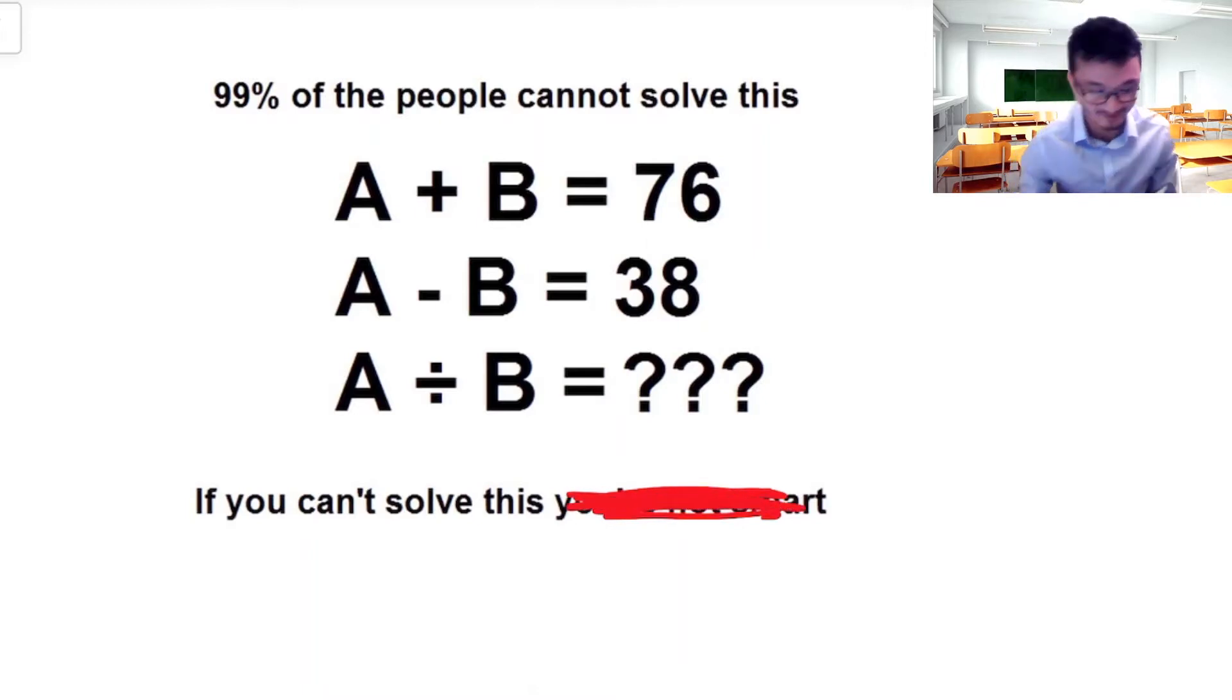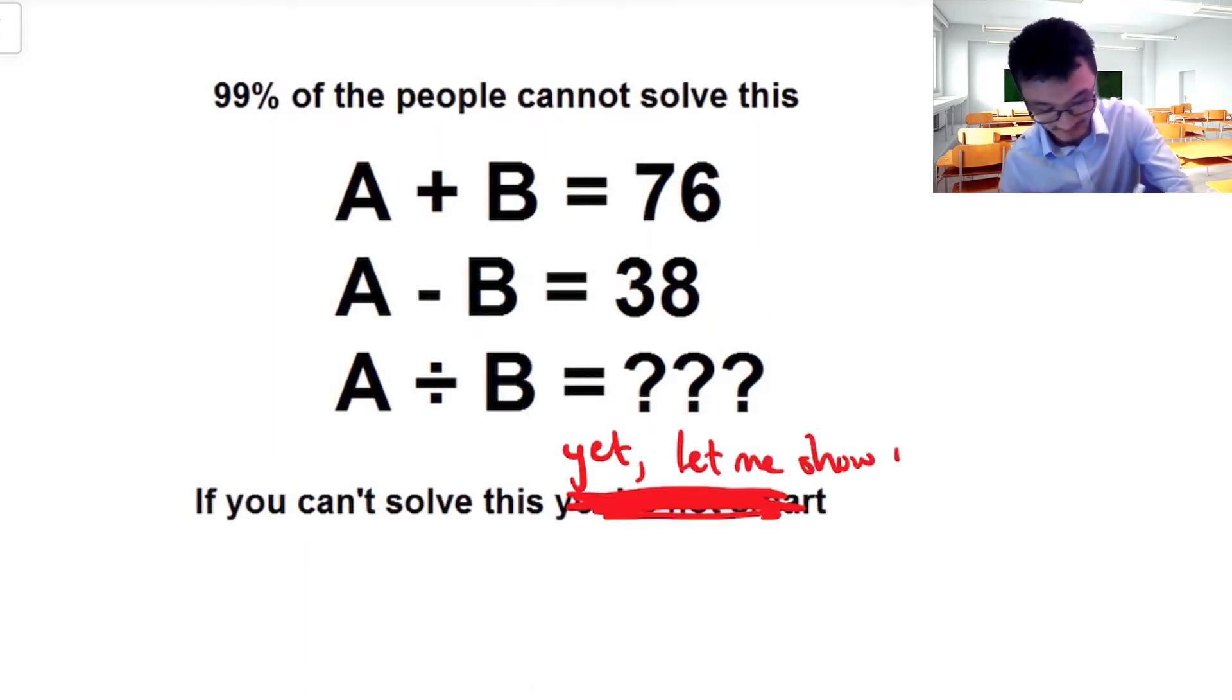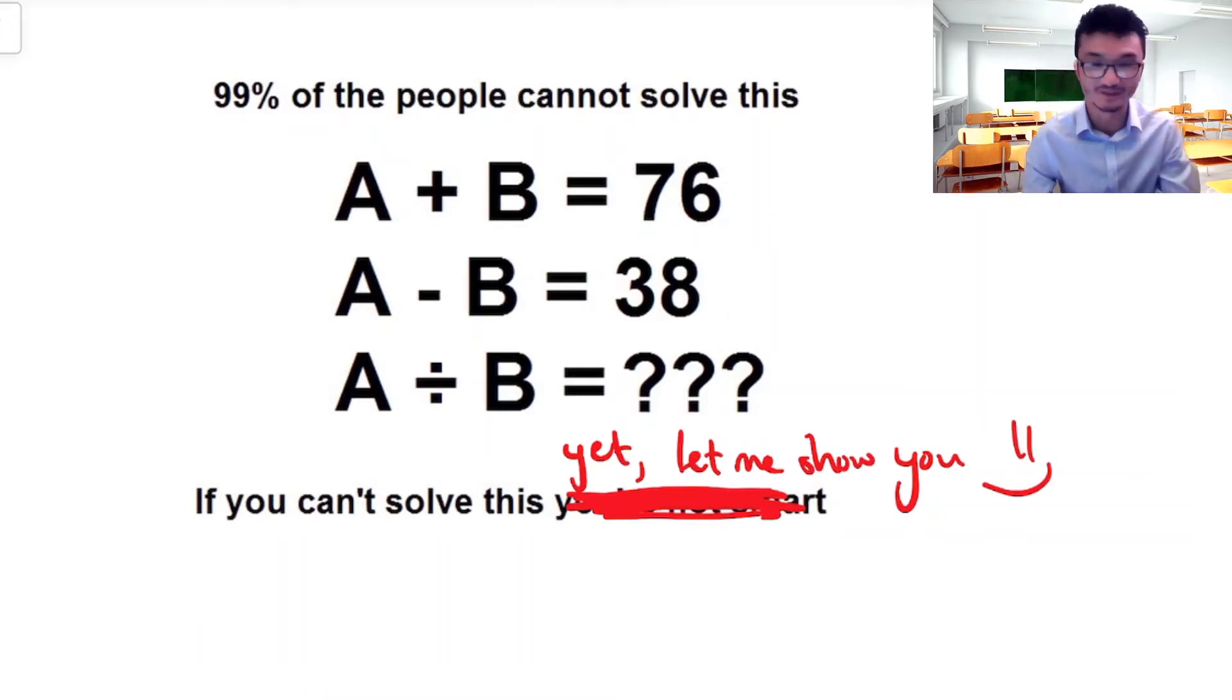So I'm just going to get rid of that. You can go away. If you can't solve this yet, let me show you. Okay. So the idea with this problem is that we have these letters A and B and we're told that A plus B is 76. We're told A minus B is 38 and they're asking us what is A divided by B going to be.